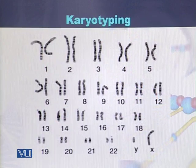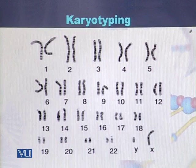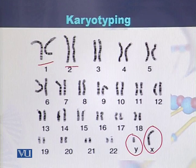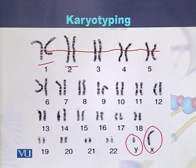Here we can see the karyotyping of a typical cell. This cell is of a male. We can see that there is an X chromosome as well as a Y chromosome. Chromosomes 1, 2, and all the others are arranged in a linear way with the position of the centromere in a straight line.